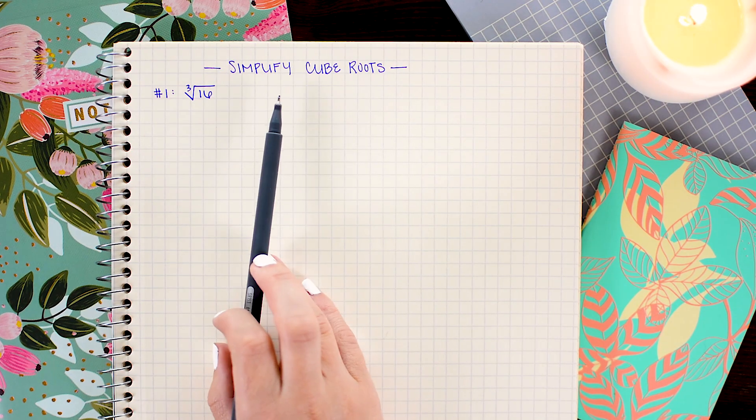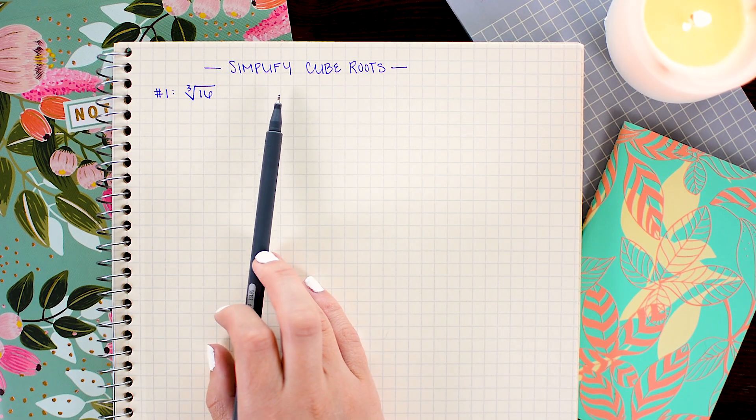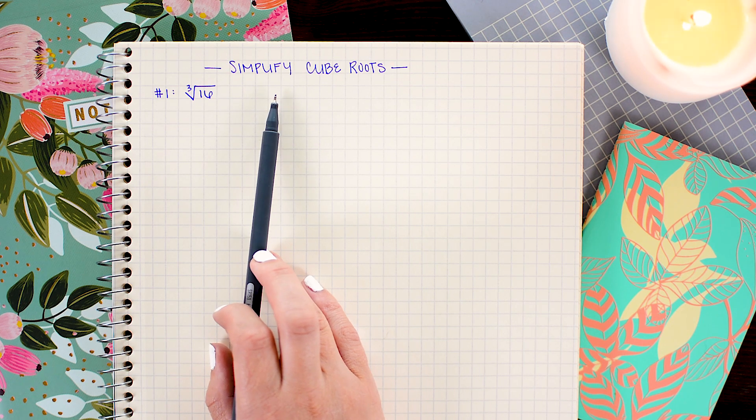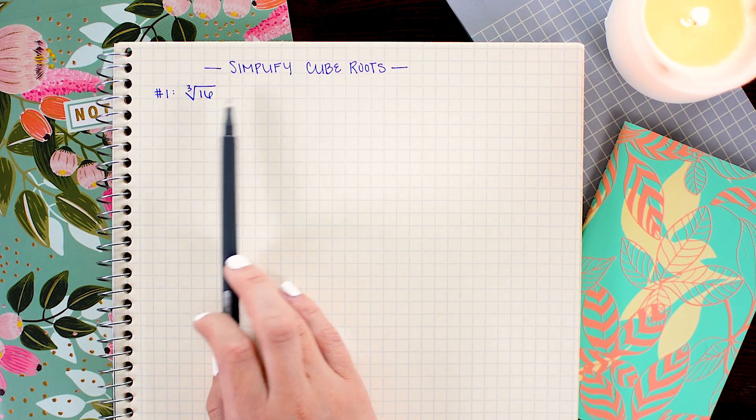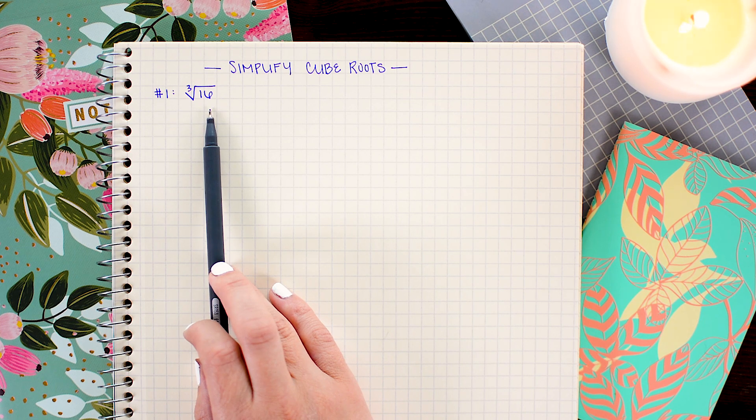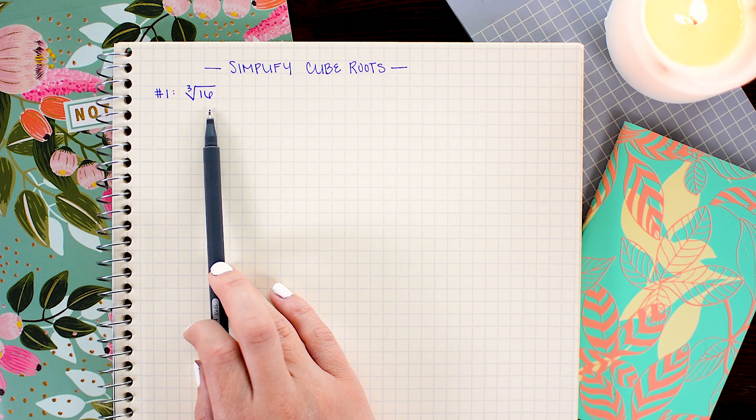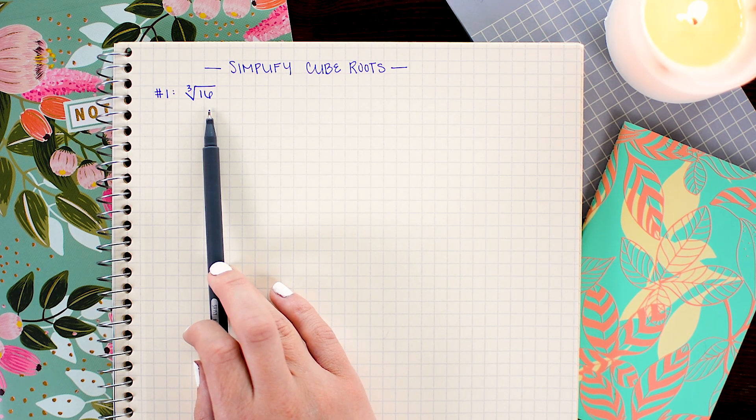When working with cube roots, it's going to be a lot like working with square roots to simplify. The only difference is that instead of looking for perfect square factors in your radicand, you're looking for perfect cube factors. So those are numbers like 8, 27, 64, 125, and so on.